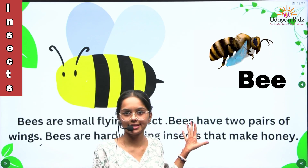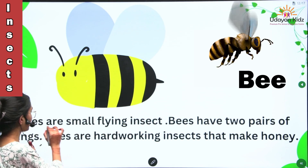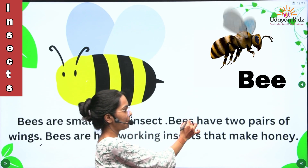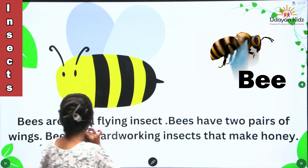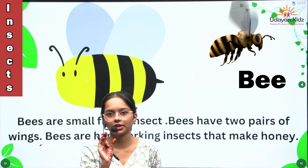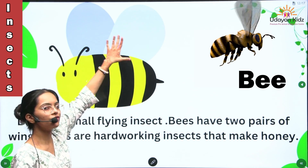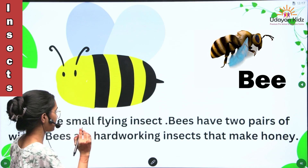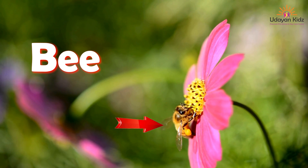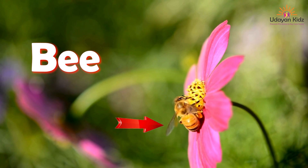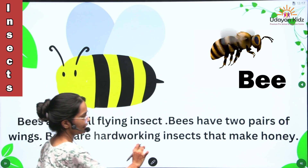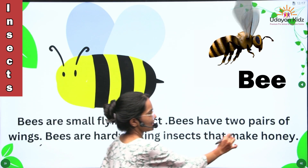This is bee. These are small flying insects. These have two pairs of wings. And these are hard working insects that make honey.